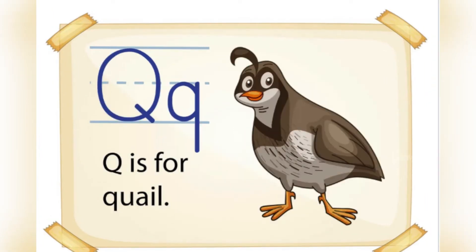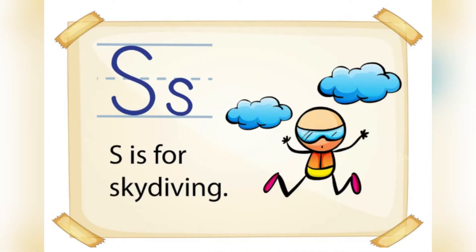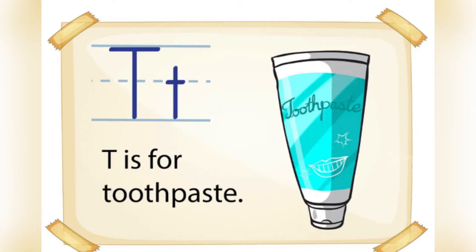Q is for Quail. R is for Rainbow. S is for Skydiving. T is for Toothpaste.